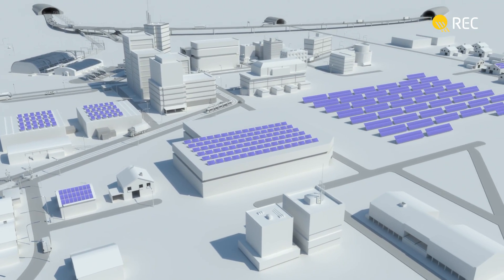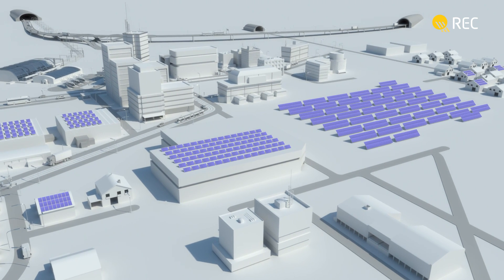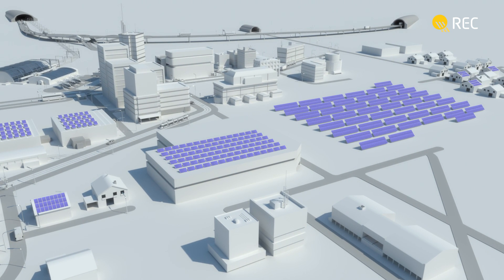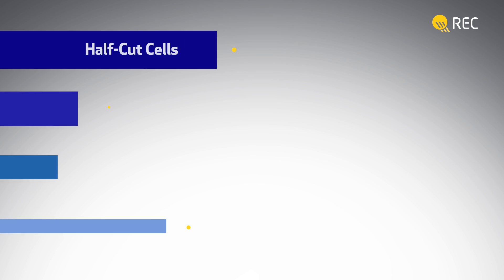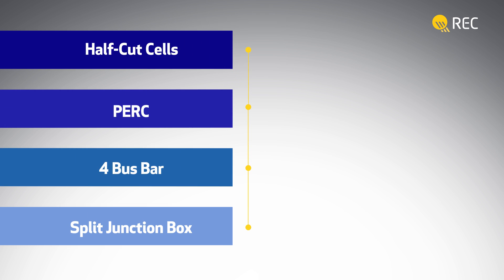The REC TwinPeak is based on a polysilicon platform and packs in a series of cell-level advancements. The first is that the panel consists of 120 half-cut solar cells within the same dimensions as a standard 60-cell panel.